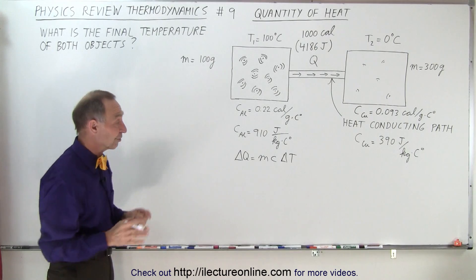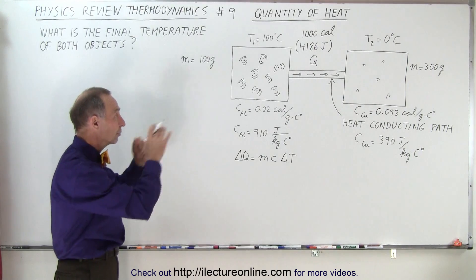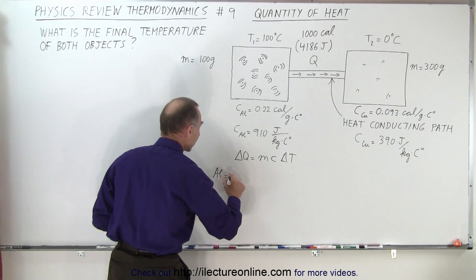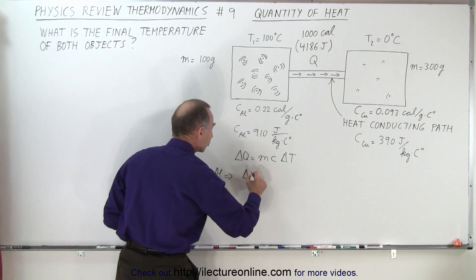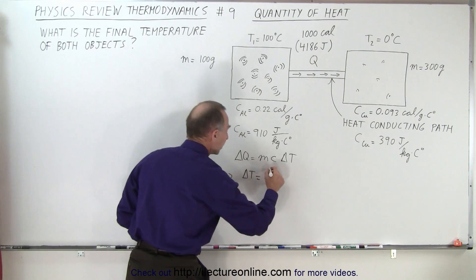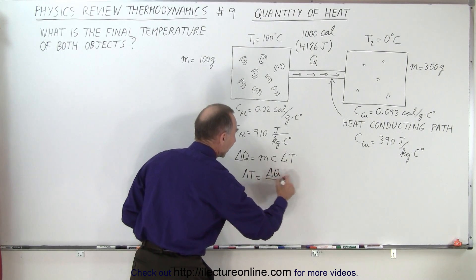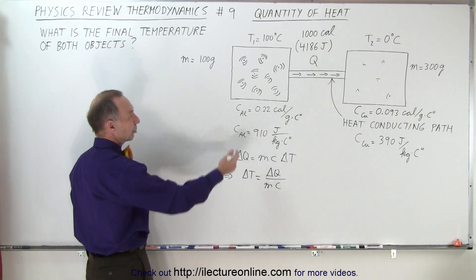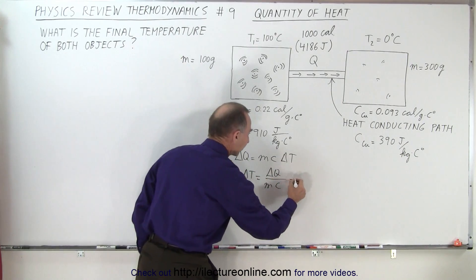So what we're trying to do here is find the change in the temperature of the two objects. Starting with aluminum, the one on the left, the change in temperature will be equal to the amount of heat transferred, divided by the mass of the object, times the specific heat. At that point you just plug in the numbers and you get the final result.